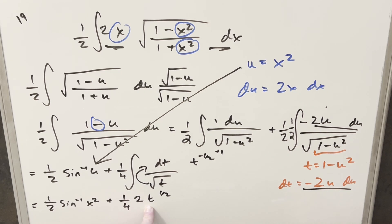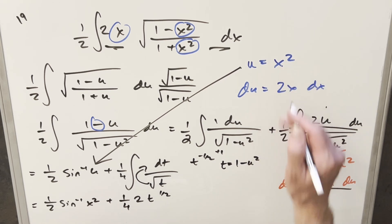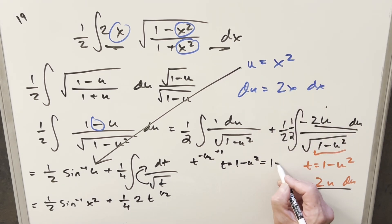We need to get this all the way back to x. So our t value is 1 minus u squared. So we have t equal to 1 minus u squared. If I plug in x squared here, this becomes 1 minus x to the fourth. So we can plug this value back in for t and see if we can finish it off.